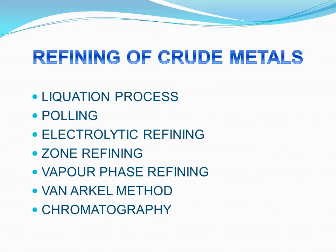Metallurgy is a process of extracting pure metals from their ores. The general principles of metallurgy include four different steps: first, concentration of the ore; second, conversion of ores into oxides or other desired compounds; third, reduction of ores to form crude metals; and lastly, refining of metals. We shall study refining of metals in detail.